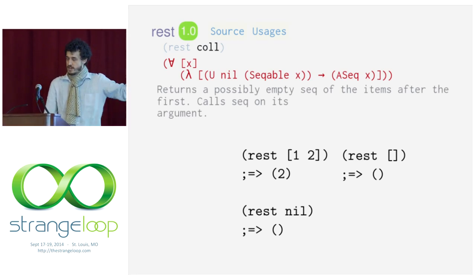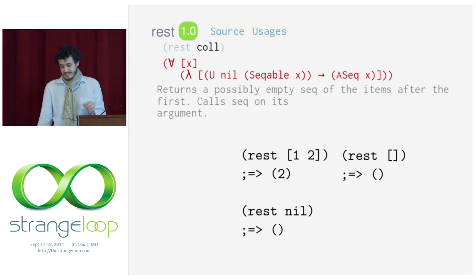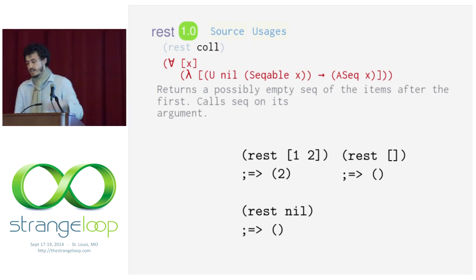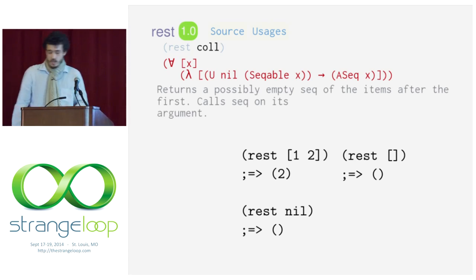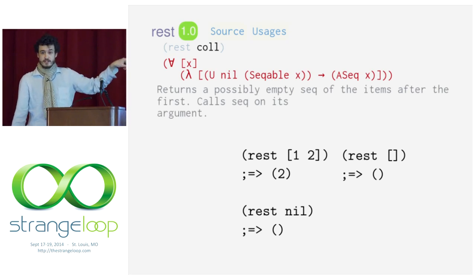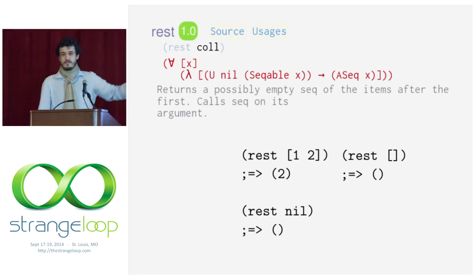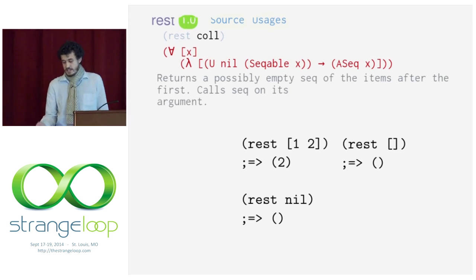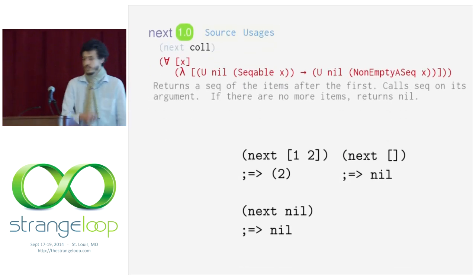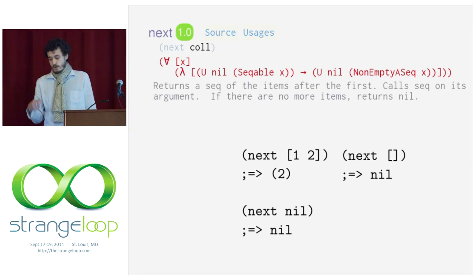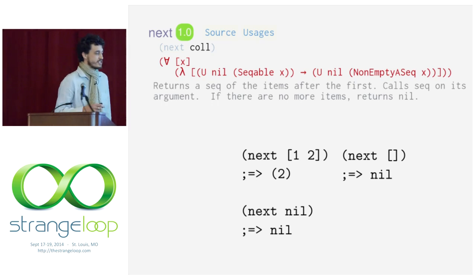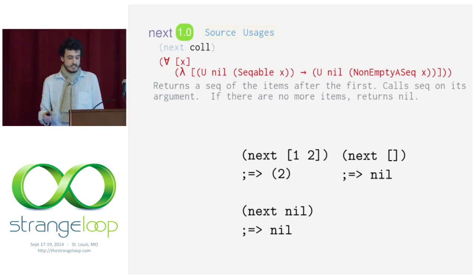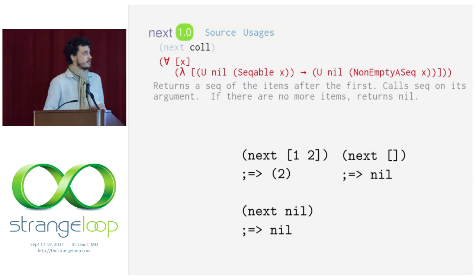We're actually using the wrong function in our recursive call. There's a very subtle difference between two functions. There's the rest function — it takes any seekable or nil and returns a seq of x, and this result is always going to be a true value. That's where our stack overflow kept going, because our loop invariant assumed the collection was going to be nil or a false value. There's a different function called next, which is the one we want.